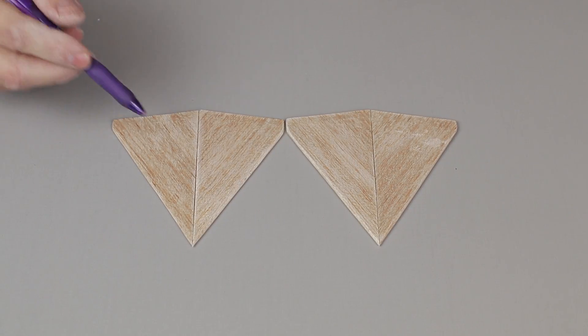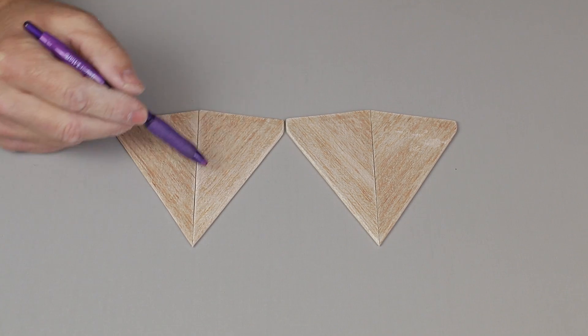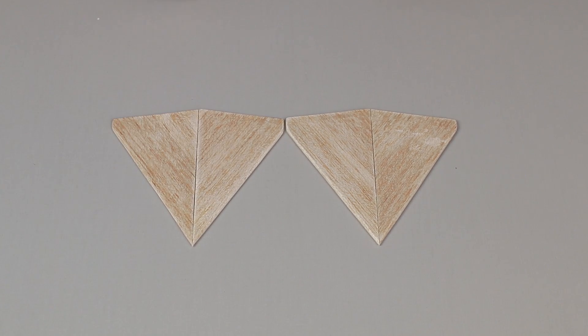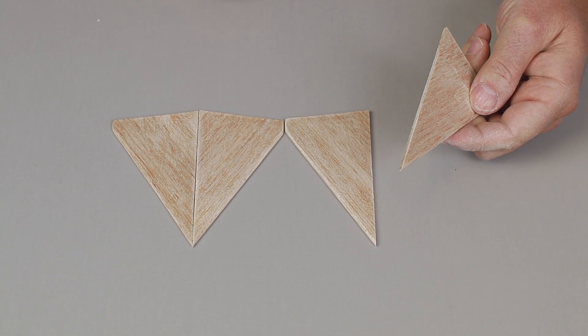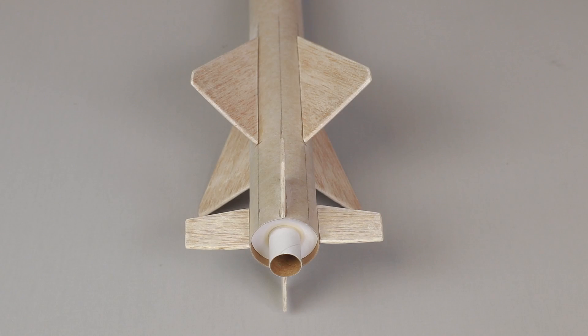After a good sanding, the fins are very smooth. Make sure you sand with the grain. And don't forget to sand the root edge here that glues to the airframe to make sure no sanding sealer is left on that. Wow, this rocket is looking great.